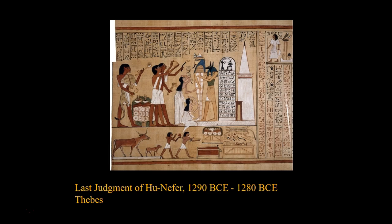At the right of the lower scene is a table bearing the various implements needed for the Opening of the Mouth ritual. At the left is shown a ritual where the foreleg of a calf, cut off while the animal is alive, is offered. The animal was then sacrificed. The calf is shown together with its mother, who might have been interpreted as showing signs of distress — and if we look at her face, she does kind of look a little upset.